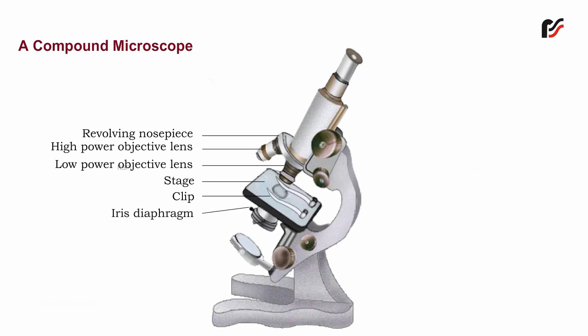Iris Diaphragm: It is present below the stage and regulates the entry of light onto the slide. Condenser: It is also present below the stage and is used for focusing the beam of light on the object.